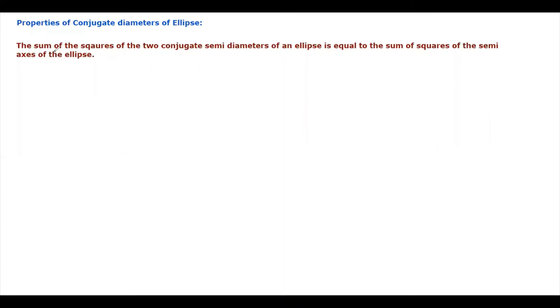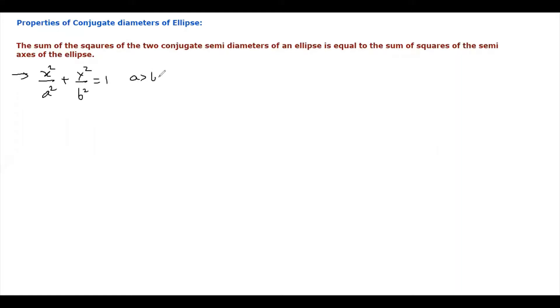In this video, we are discussing one more property of conjugate diameters of an ellipse. The sum of squares of two conjugate semi-diameters of an ellipse is equal to the sum of squares of the semi-axes of the ellipse. The equation of the ellipse is x² / a² + y² / b² = 1, where a is greater than b.